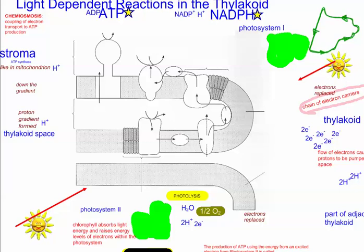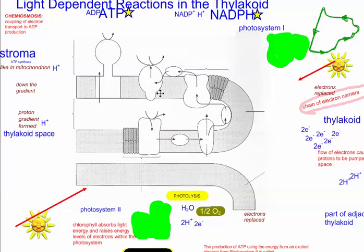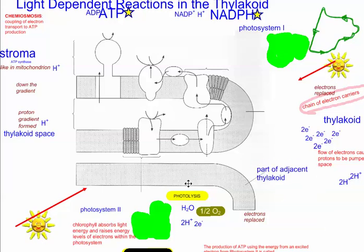We're going to be looking at specifically the light-dependent reactions in the thylakoid. This is one thylakoid right here, and this is going to be an adjacent thylakoid. In the previous video, we already saw the big overview, but right now we're not going to be looking at the Calvin cycle or the light-independent reactions.